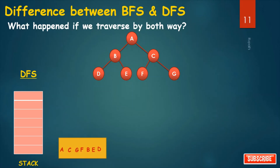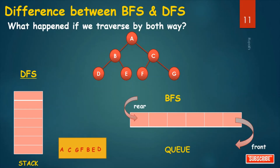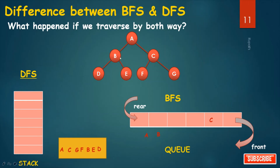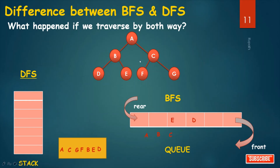Now for BFS traversal, we need one queue. Start traversing from the root. Insert A, then remove A from the queue. Check the connected nodes: B and C — insert B and C. Remove B and check connected nodes: A, D, and E. A is in status 3, so insert only D and E. Remove C and check connected nodes: A, F, and G. A is already in status 3, so insert F and G.